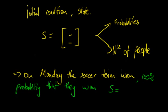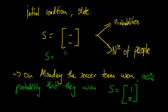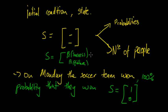So S, the initial state or initial condition, would equal one, zero. In general, S is equal to the probability of success over the probability of failure. Assuming you set up the transition matrix as done previously, so the probability of success on top, which is one, and the probability of failure on the bottom.